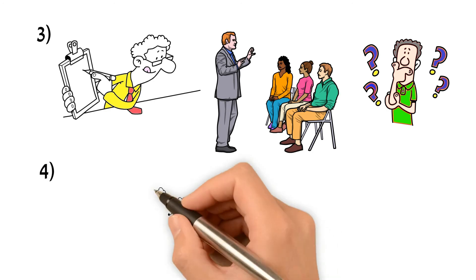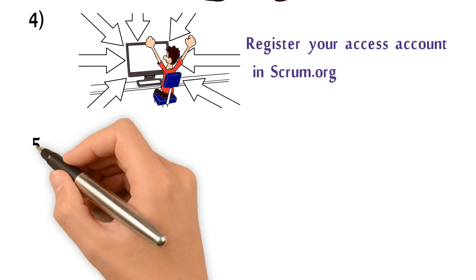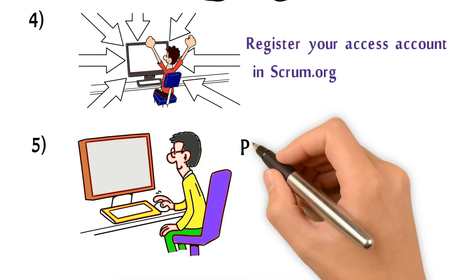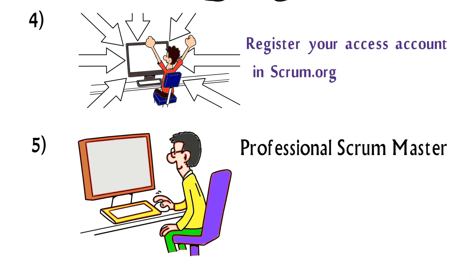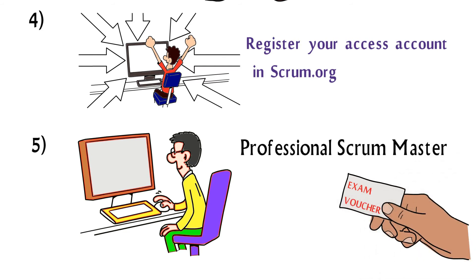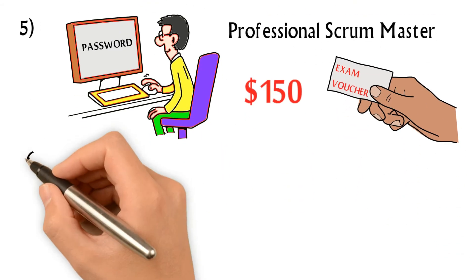Four, register your access account in Scrum.org. Five, click Professional Scrum Master link under the Certification menu drop-down in Scrum.org website and start to buy the exam voucher. Exam cost is $150. You should receive a password for your PSM 1 exam within one business day.